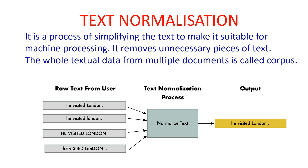As I told you, in processing we remove the irrelevant data. When I am speaking something, there may be many words which are irrelevant but we are using them for syntax or grammatical purposes. For the machine, those words are not required. So removing those words which are irrelevant and not required — those unnecessary pieces of text — that is text normalization.